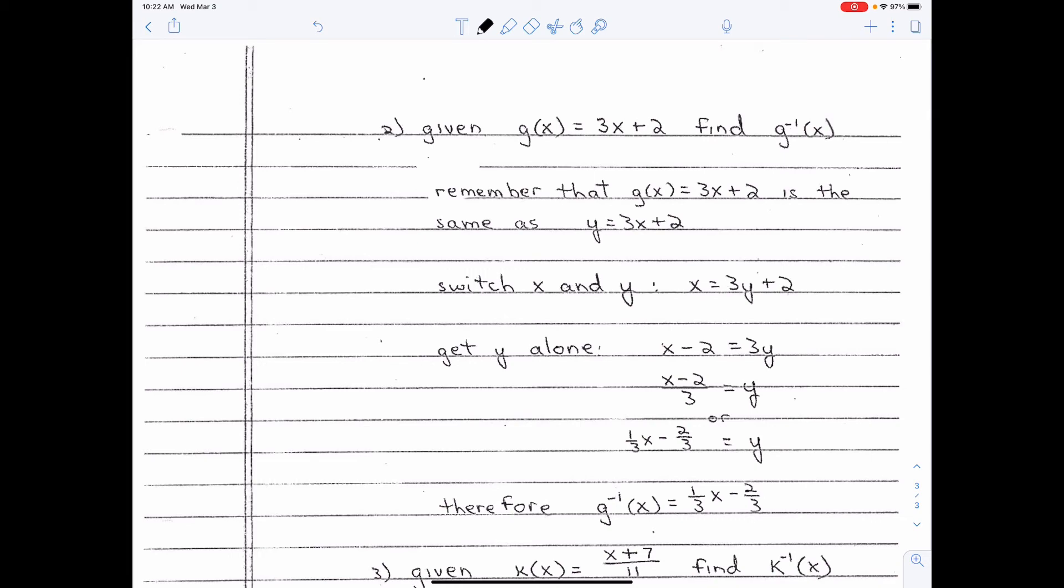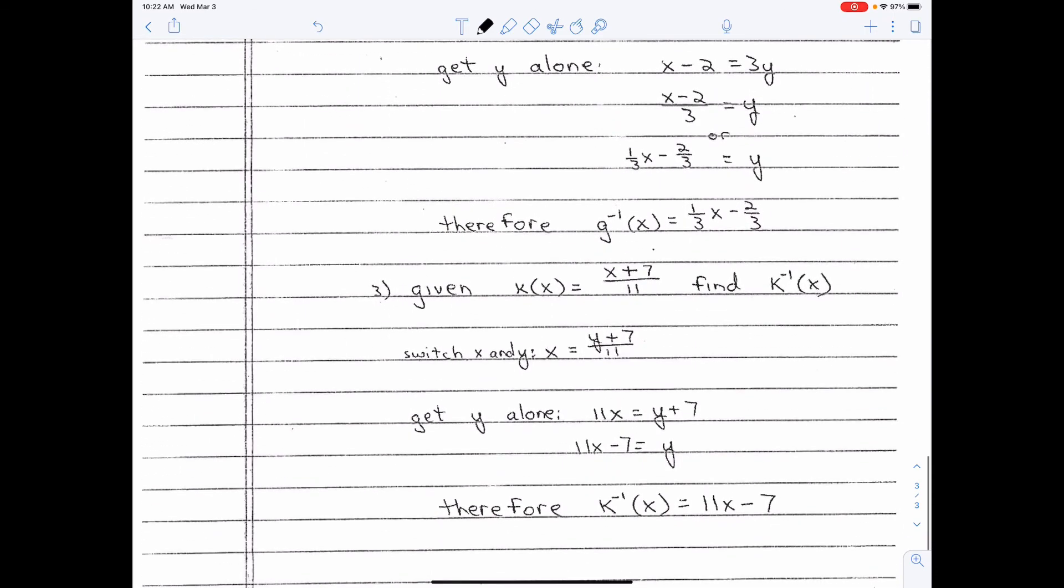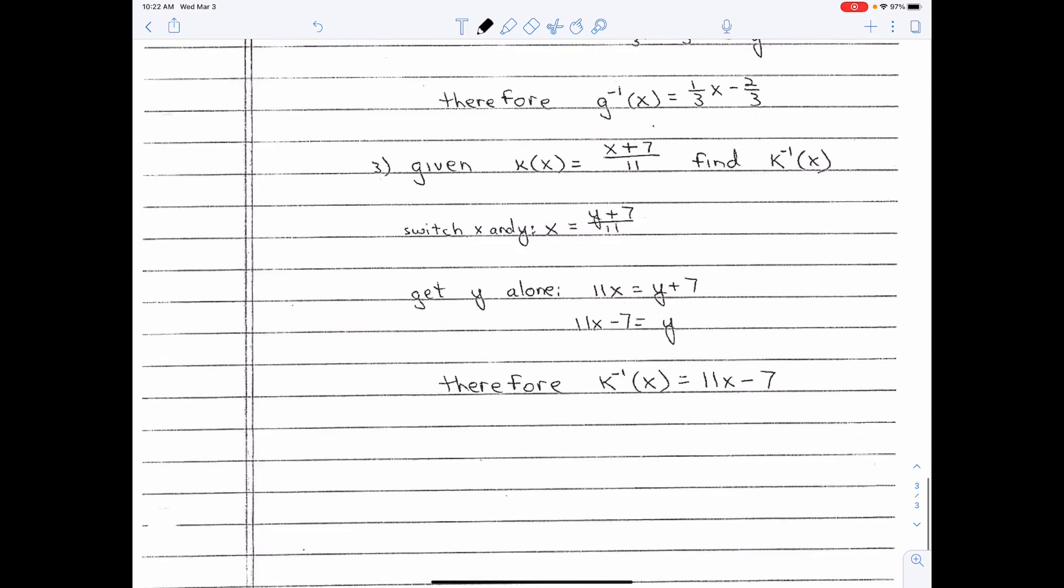But, technically, it's g to the negative one of x equals one-third x minus two-thirds. And really, I'm not kidding you. That's all there is to it.